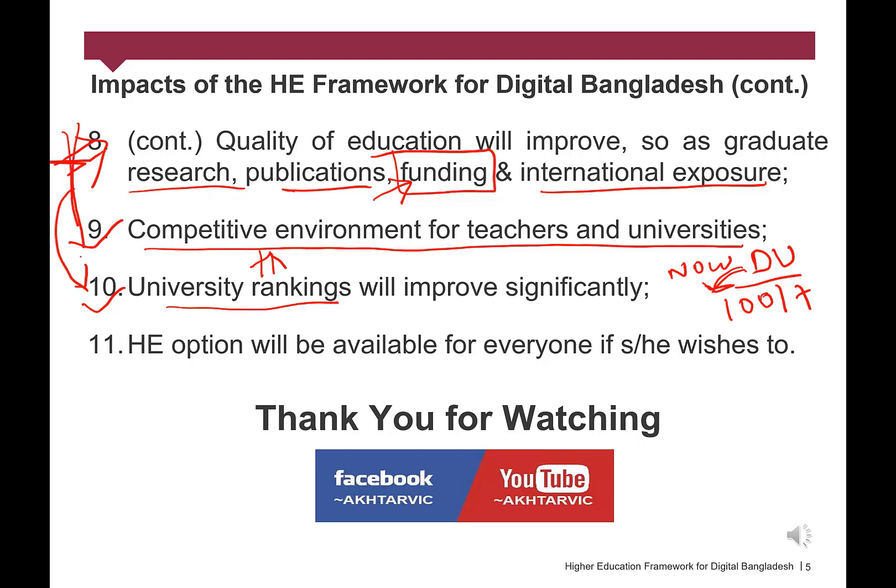Finally, we should not forget that higher education is a right for our citizens and it should be available for everyone if he or she wishes to. Government should introduce various loan programs for students based on their socioeconomic conditions. After graduation, when students get a job or become self-employed and their earnings cross a certain threshold value such as 20 or 30 thousand taka per month, he or she must pay the education loan gradually. The higher education loan should be interest-free but needs to be indexed annually. In conclusion, the Higher Education Framework for Digital Bangladesh is a comprehensive solution. It will be different and probably better in many ways than the existing systems across the world. Thank you for watching. Stay safe at home and continue education.